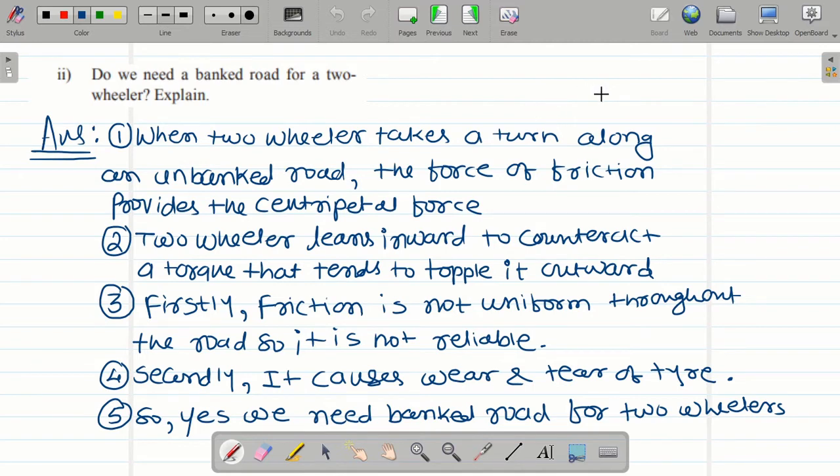When a two-wheeler takes a turn along an unbanked road, the frictional force provides the necessary centripetal force. The two-wheeler leans inward when turning to counter the tendency to topple in the outward direction.